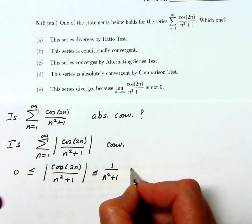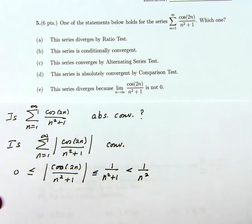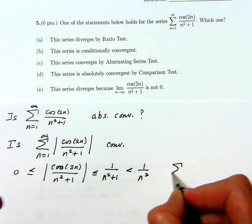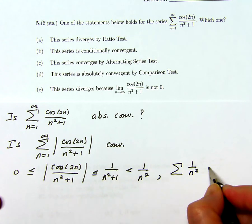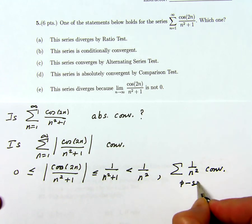And n squared plus 1 is bigger than n squared, so that's less than 1 over n squared. And now I know that the sum of 1 over n squared converges because it's a p series with p equals 2.